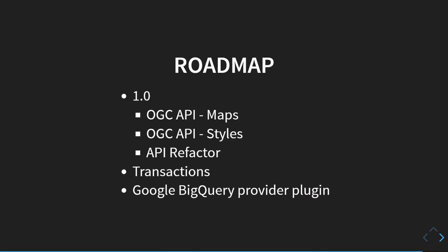In terms of roadmap, we're not at version 1.0 yet. We want to implement the OGC API Maps and Styles specifications. There is an OGC API sprint in late November or December in Brussels, and our target is to implement those specifications at that sprint. We have some refactoring to do as well — with any project that has a high volume of contributions, you do have to step back and refactor the API periodically. We also want to support transactions: create, update, and delete data in alignment with OGC API Features Part 4. There are also discussions on implementing a Google BigQuery provider plugin that Francesco's company is involved in, which will be an upcoming feature made available to the community.